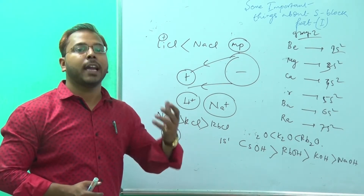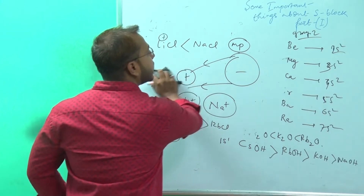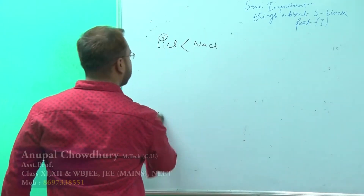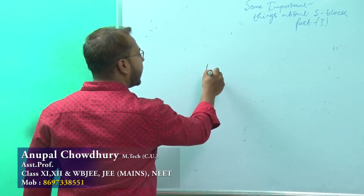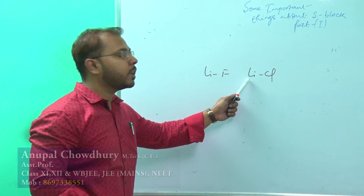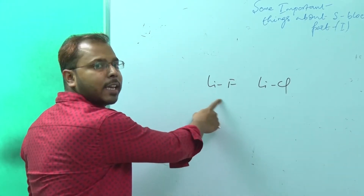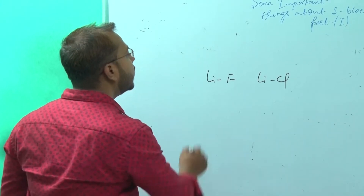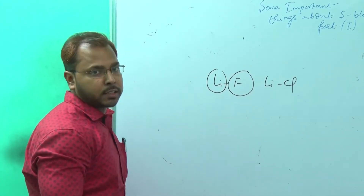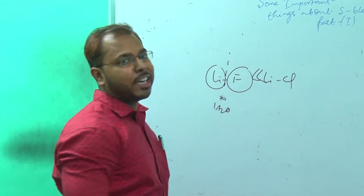Why is LiF insoluble in water? LiCl is easier to dissolve because Li+ can attract Cl- with higher polarizing power. One might expect LiF to be more water soluble, but due to the smaller size of both lithium and fluorine, the lattice energy of LiF is much higher. Water molecules cannot separate the ions easily. That is why LiF is a very water-insoluble substance.